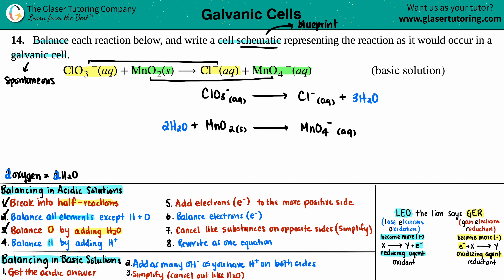Step four: balance the hydrogen by adding H⁺ — don't forget that plus sign, that's what makes it acidic. For the chlorine half-reaction: no hydrogens on the left, but six on the right (three H₂O × 2 = six), so add six H⁺ on the left. For the manganese half-reaction: four H's on the left from the H₂O added, none on the right, so add four H⁺ on the right. Step four is done.